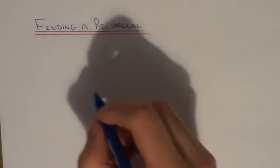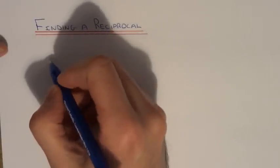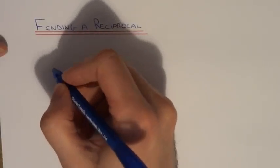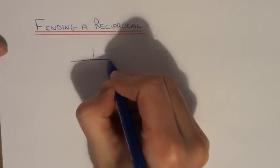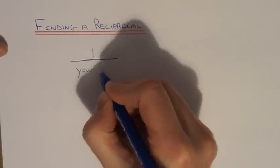Hi, today I'm going to tell you how to work out a reciprocal of a number. So to do this all you need to do is divide the number into 1. So you do 1 divided by your number.